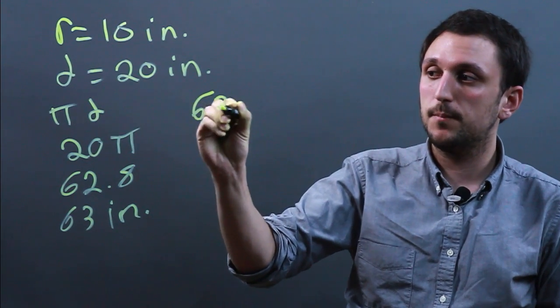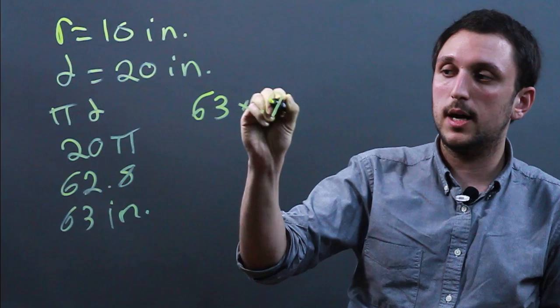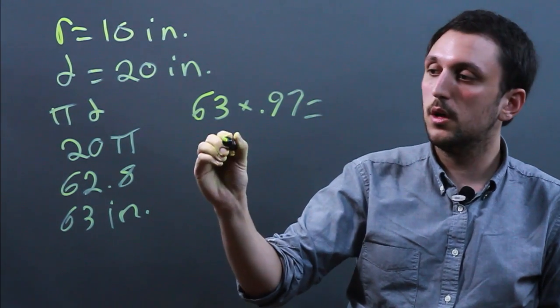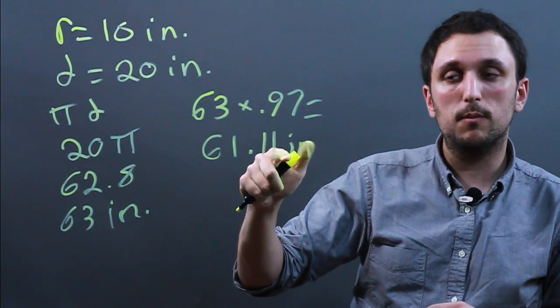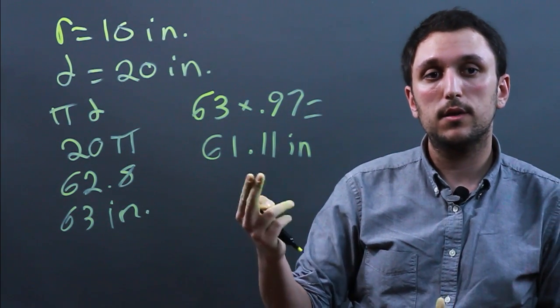So you take 63 times 0.97 and that's going to equal 61.11 inches, and that would be the rolling circumference of a properly inflated tire.